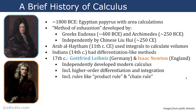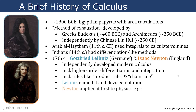Leibniz, the German mathematician from the 17th century, named calculus and devised the notation that is still most popular today. Isaac Newton, on the other hand, was the first person to apply calculus to physics — for example, using it to describe the laws of motion as well as gravity. Newton really characterized gravity and was able to define it, and calculus allowed him to do that.